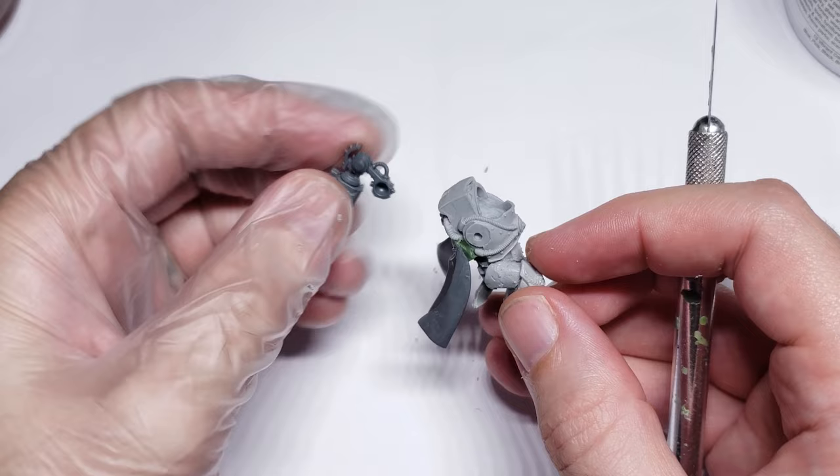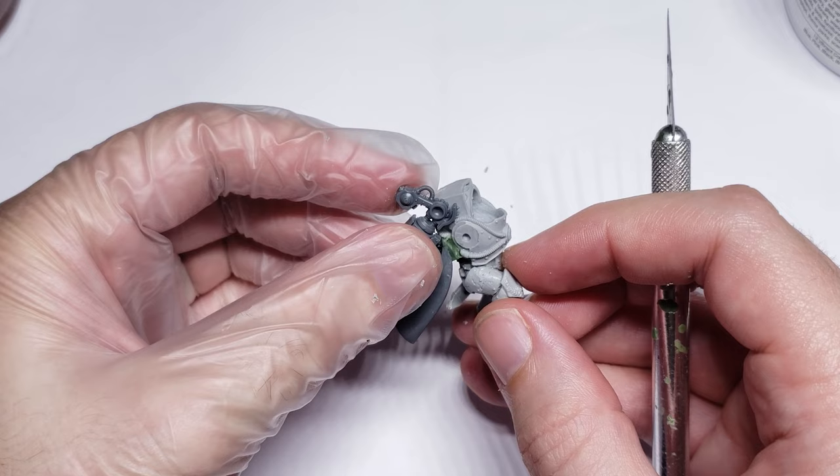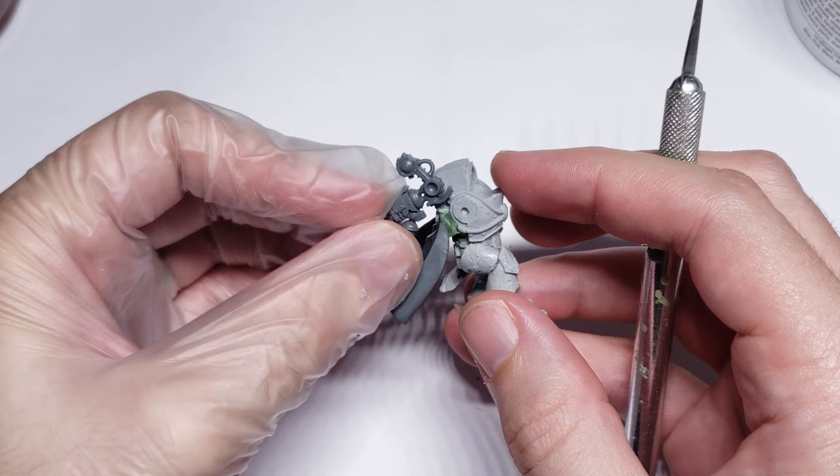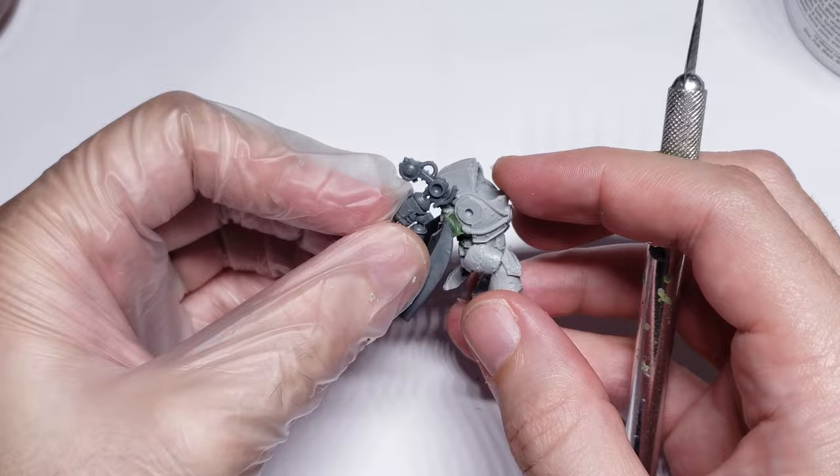After digging around in my bits box a bit, I came across this flamethrower part from the Cataphron Destroyer kit that I picked up for some long abandoned project, and as luck would have it, this first connection point here fits the ball joint from the Havoc servo arm perfectly, and then this piece of plastic here should work as a mounting bracket similar to the Ferris Manus bit.